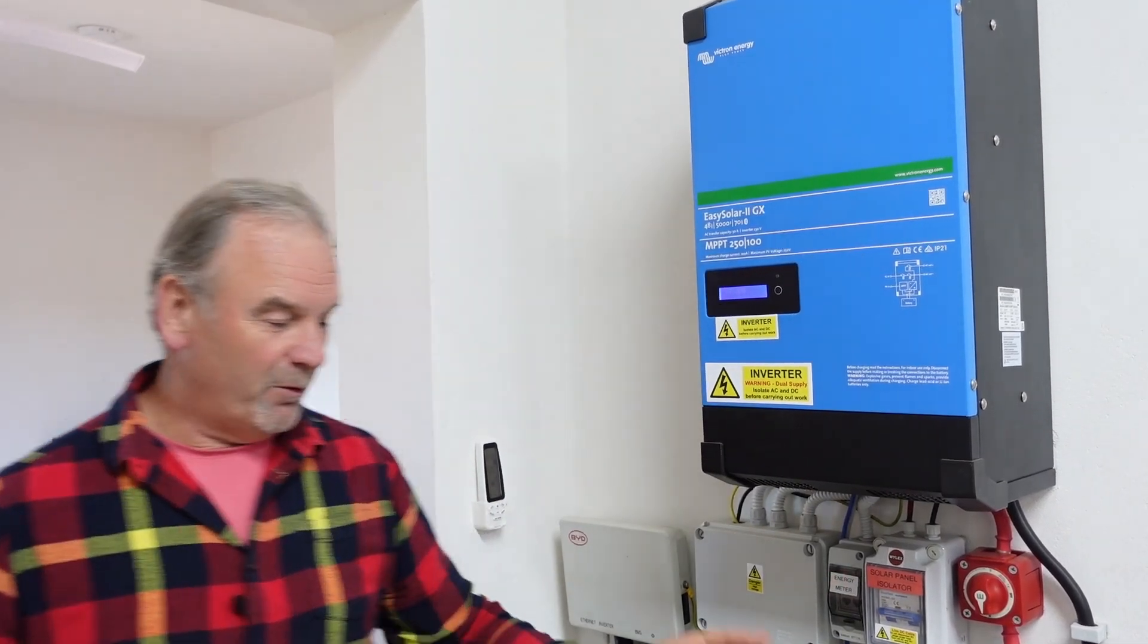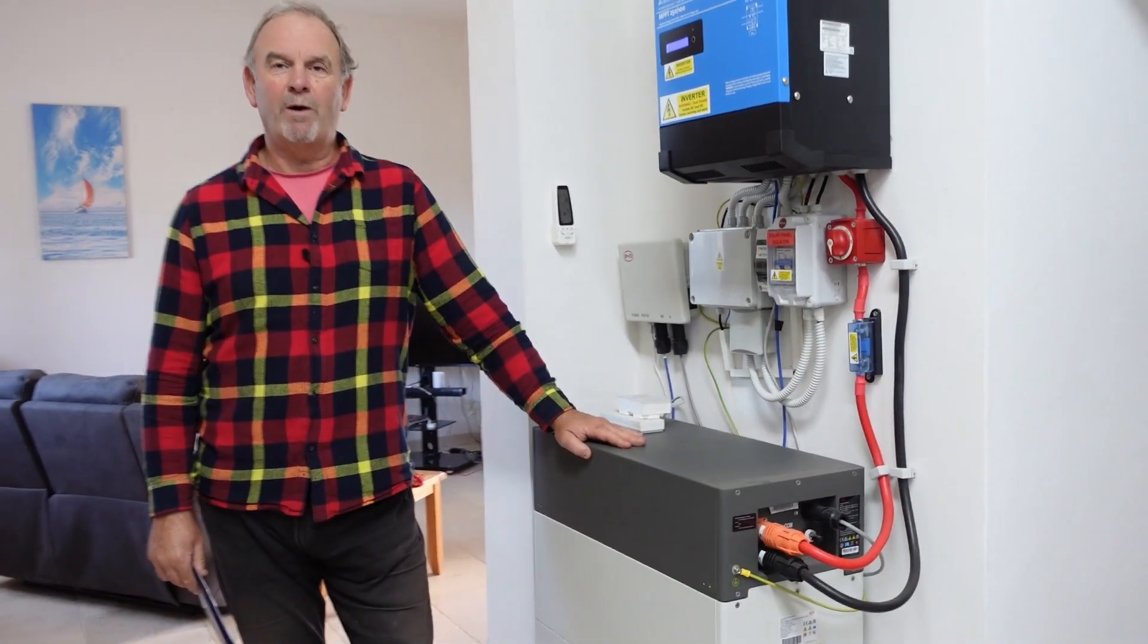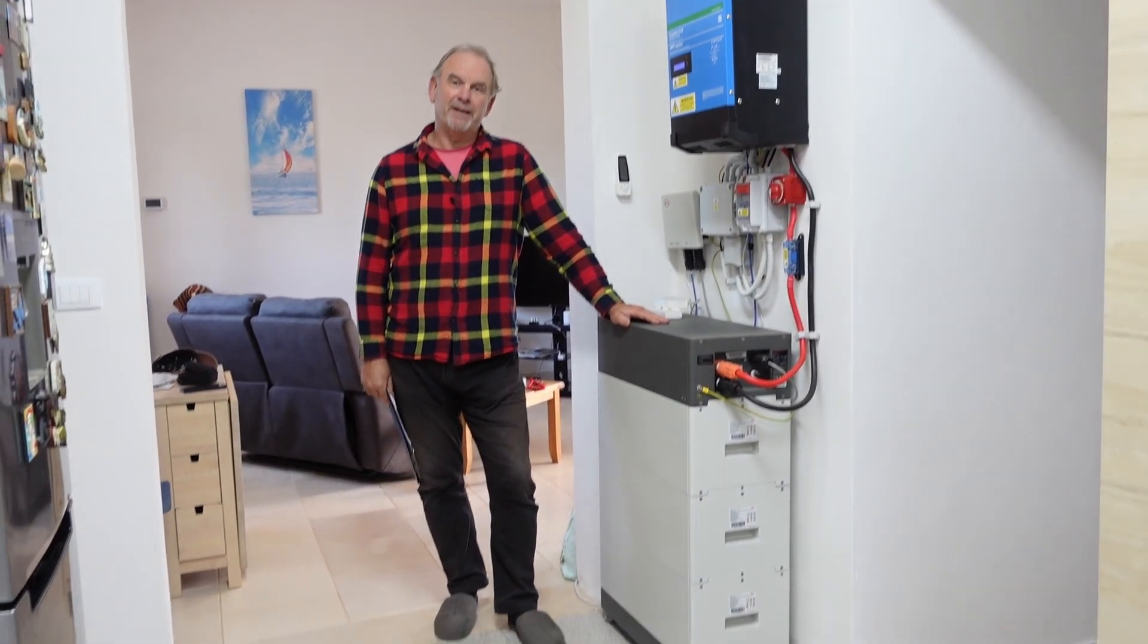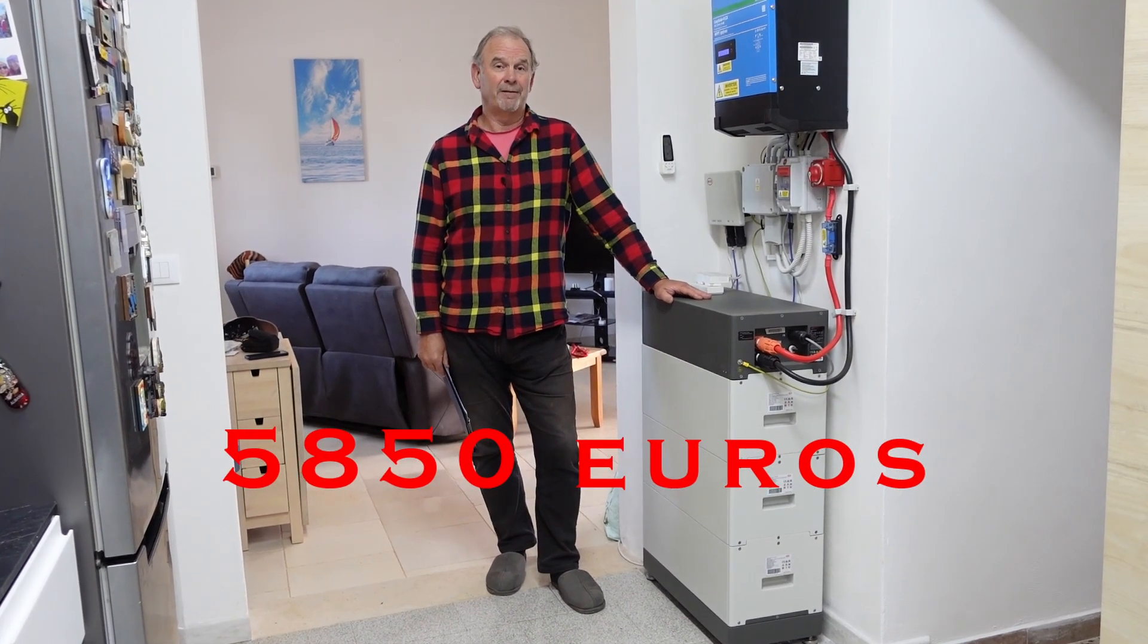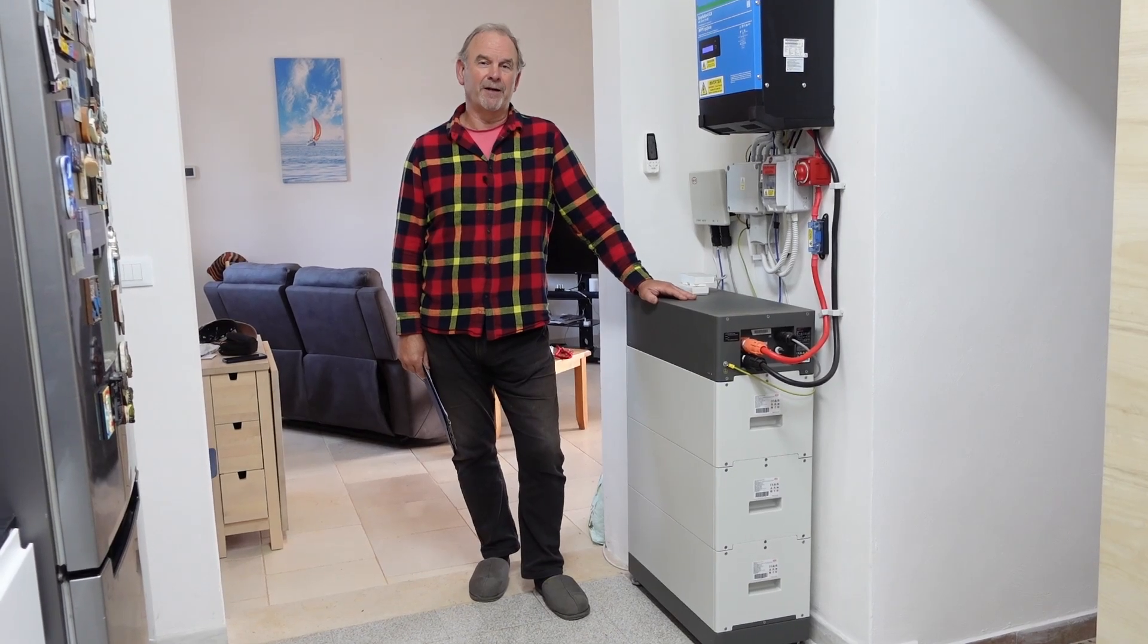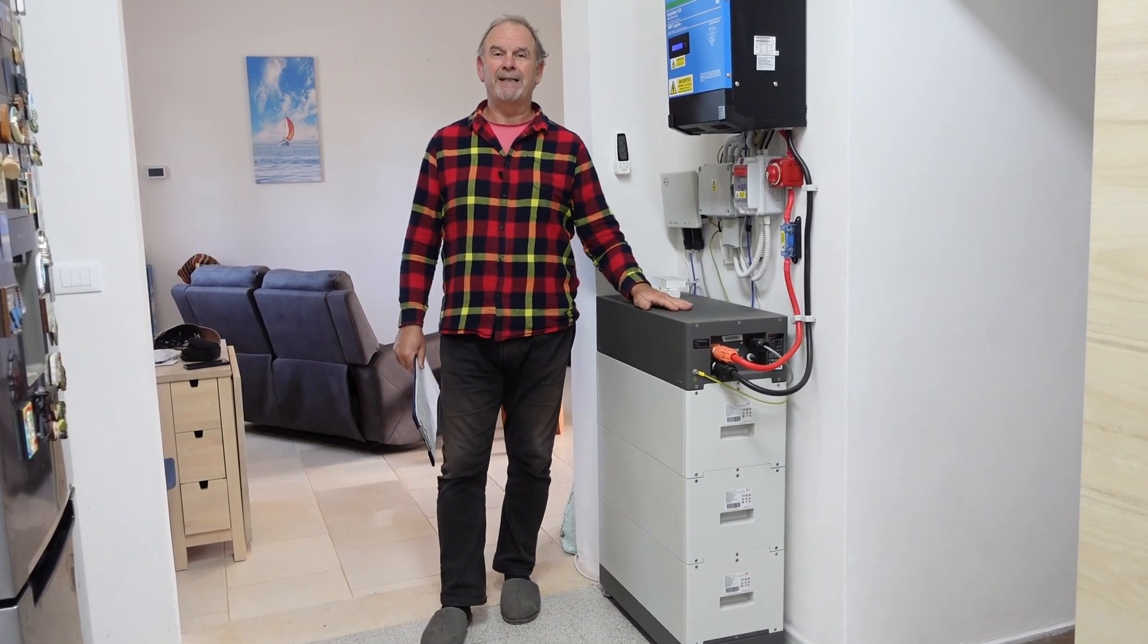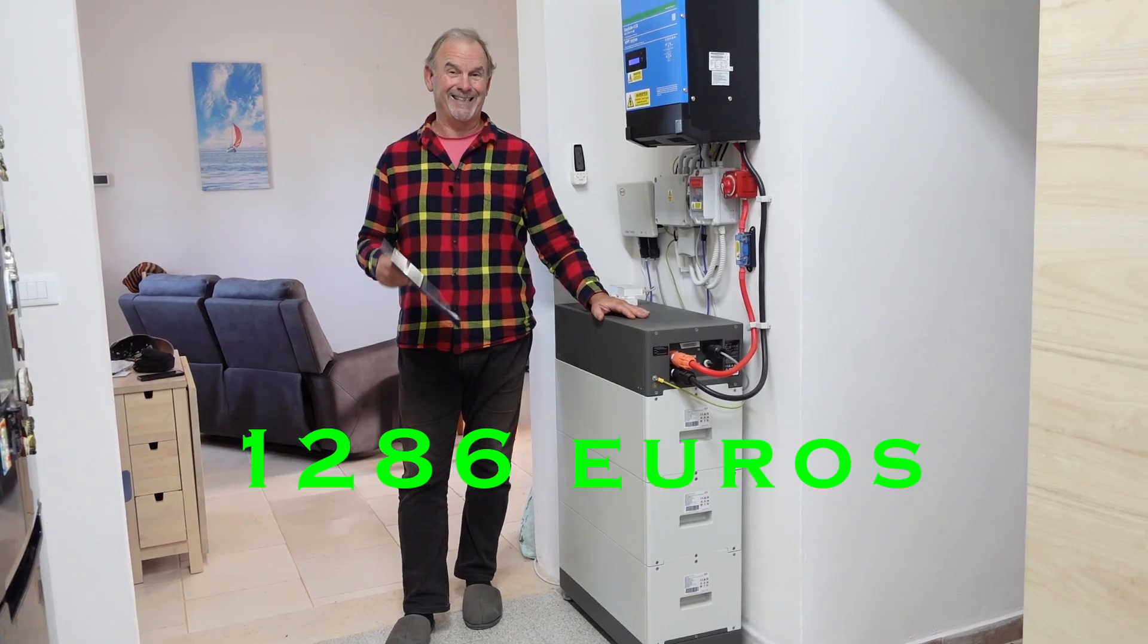The next bit we bought was the battery, which is down here. This is the BYD LVS 12 kilowatt battery. The best Italian supplier I could find was 5,880 euros delivered. I went back to E-tronics, the Dutch company, and they did it for 4,581 euros delivered, so there was a saving of 1,268 euros.